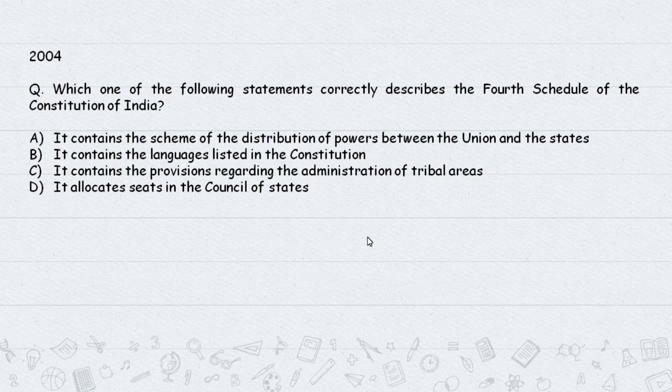Answer for Fourth Schedule: Using TEARS mnemonic - R stands for Rajya Sabha seat allocation. The Fourth Schedule allocates seats in the Council of States (Rajya Sabha). That is the correct description of the Fourth Schedule.